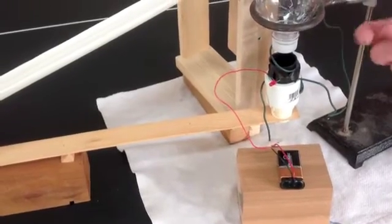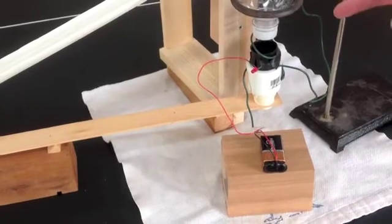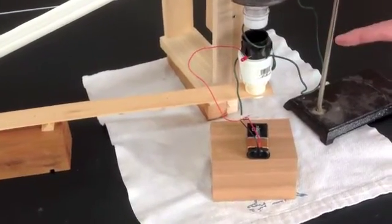Inside the film canister are two wires that are not connecting. The salt water will be a conductor. It'll complete the circuit between the two wires and the little light bulb will go on.